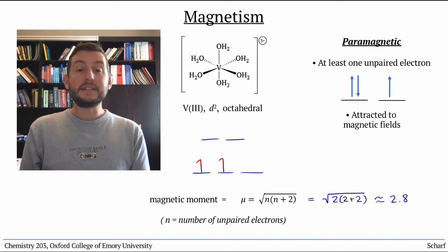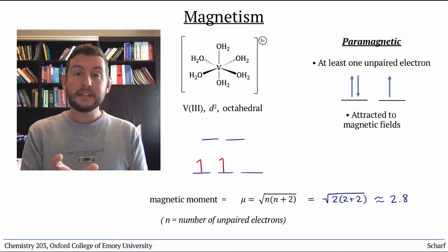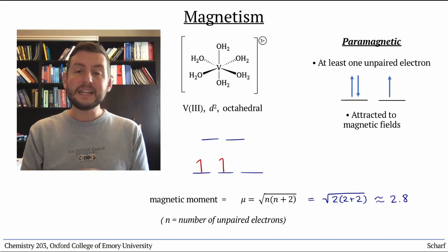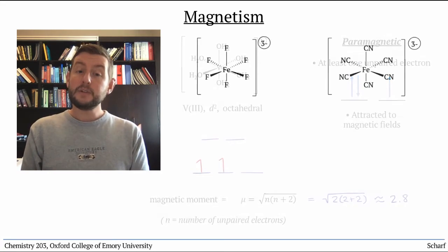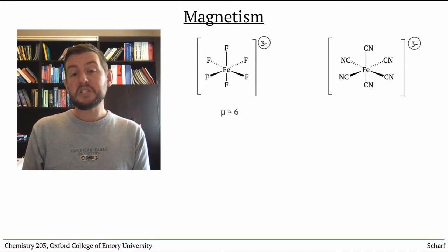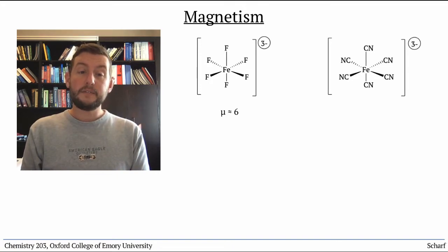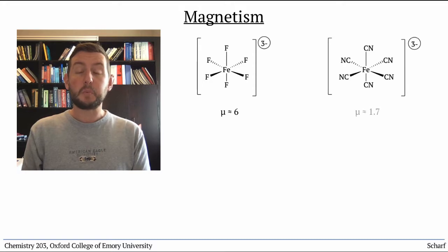Some complexes of the same metal ions in identical geometries, but with different ligands, have different magnetic moments. For instance, FeF6 3- has a magnetic moment of about 6, while Fe(CN)6 3- has a magnetic moment of just 1.7.